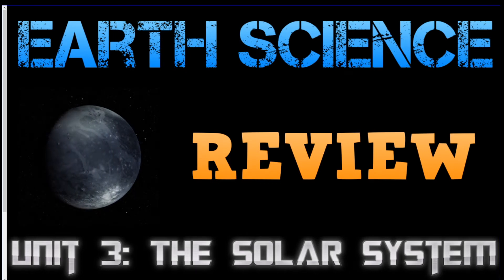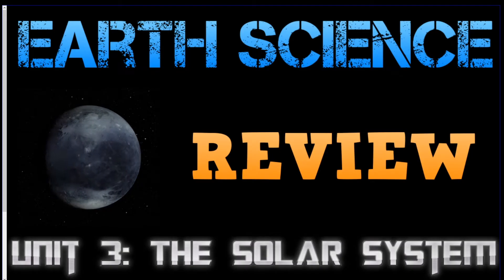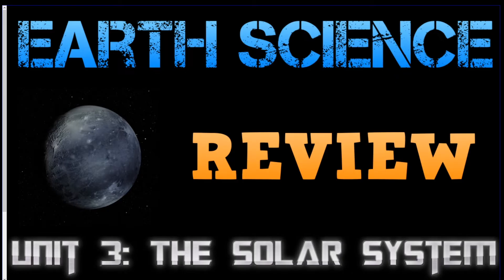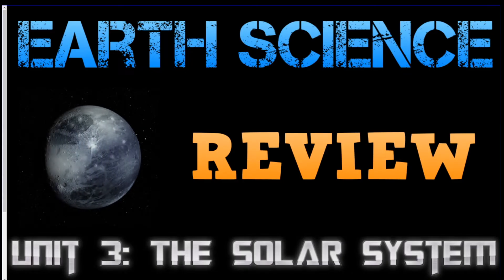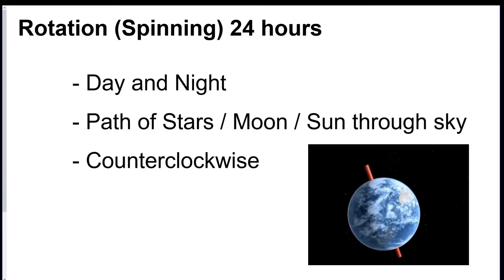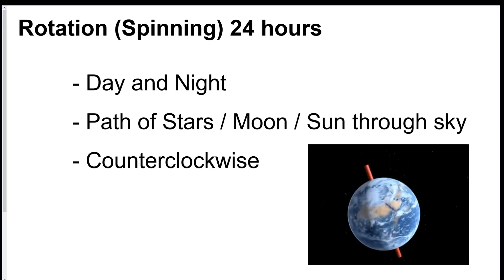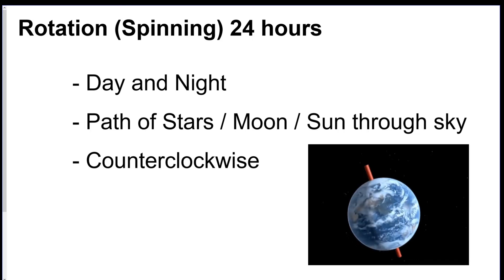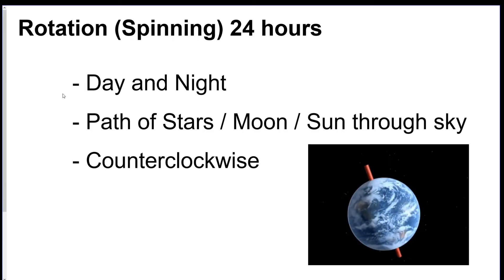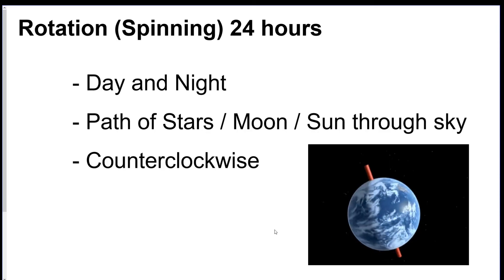Hey everyone, we are back for the next earth science review video. This is still unit 3, astronomy — the solar system and the planets today. Before we get into it, there are a couple concepts we need to go over. First, we have to establish what we know about the earth's spinning, called rotation. It takes about 24 hours, brings day and night, and the path of the stars, moon, and sun through the sky. The rotation is counterclockwise.